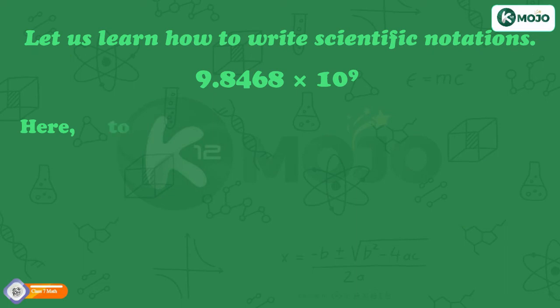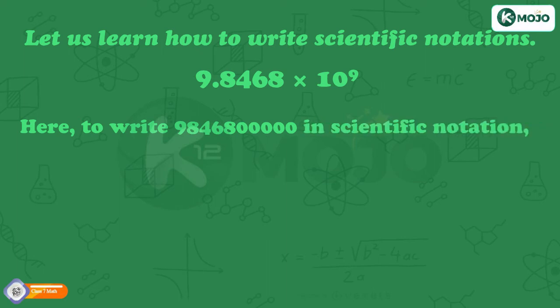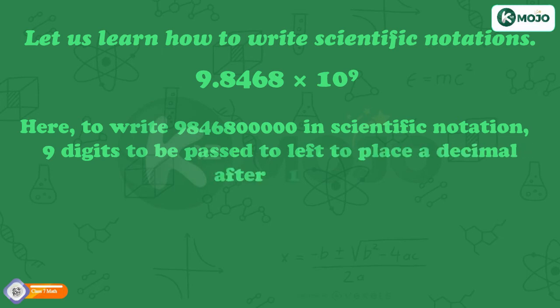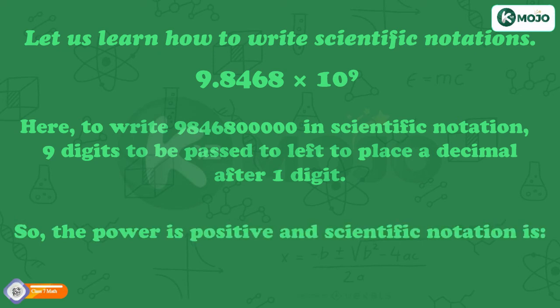Here, to write 98468000000 in Scientific Notation, 9 digits to be passed to left to place a decimal after 1 digit. So, the power is positive and Scientific Notation is 9.8468 into 10 raised to the power 9.